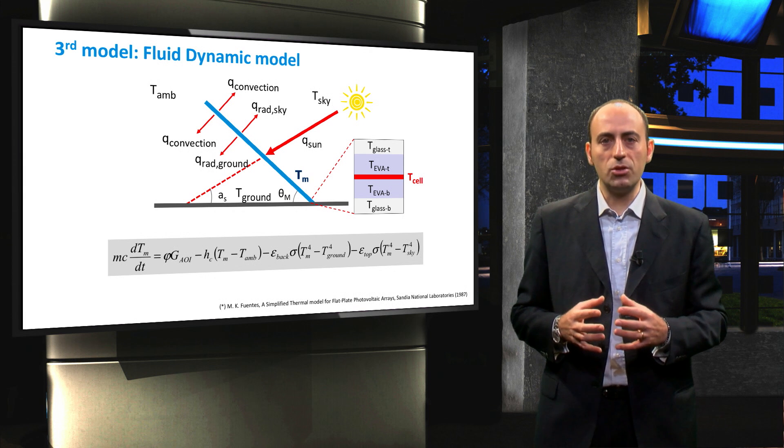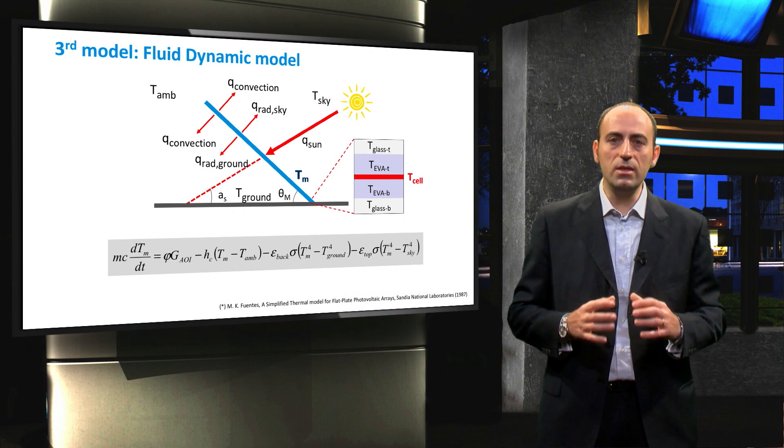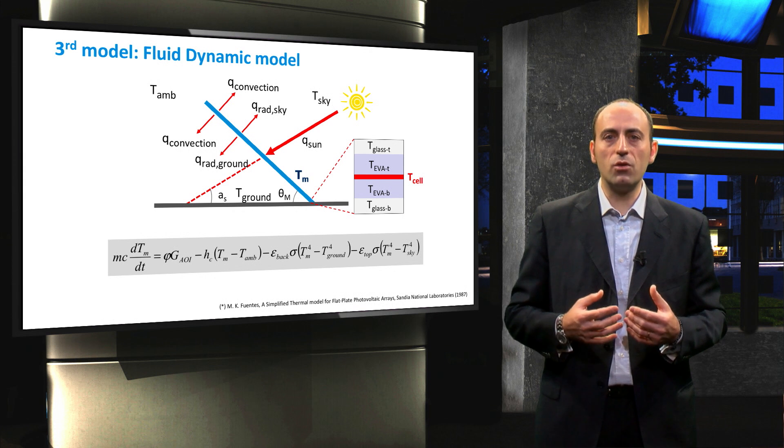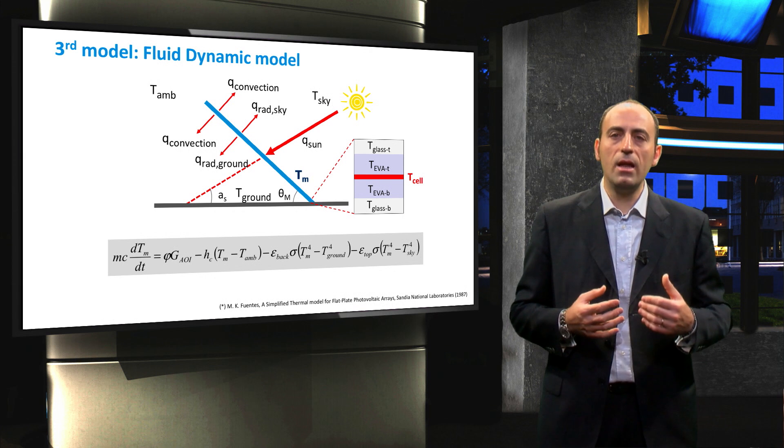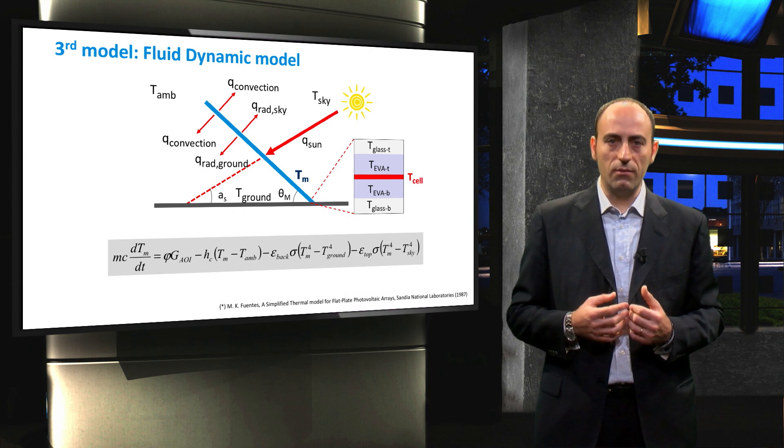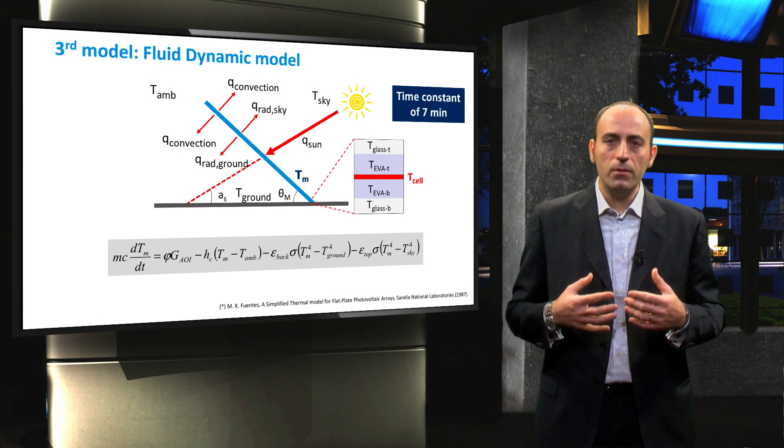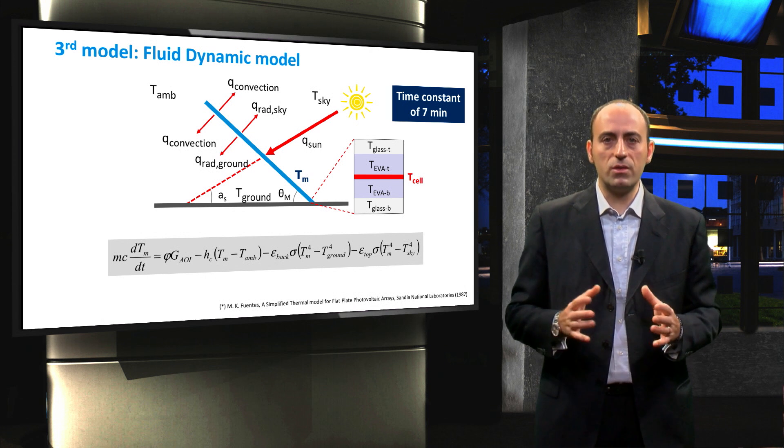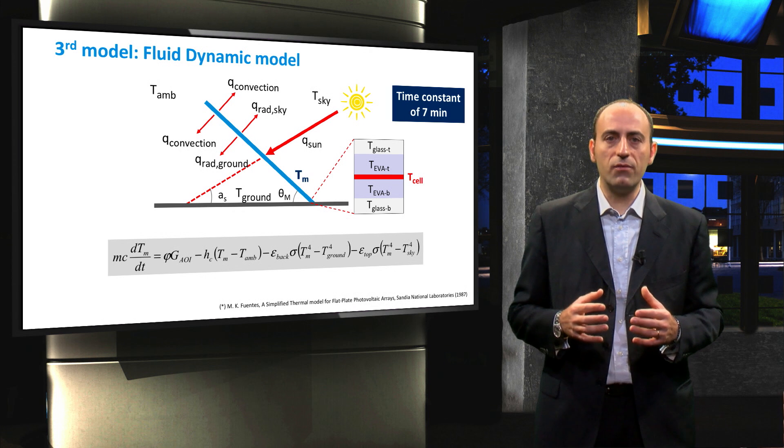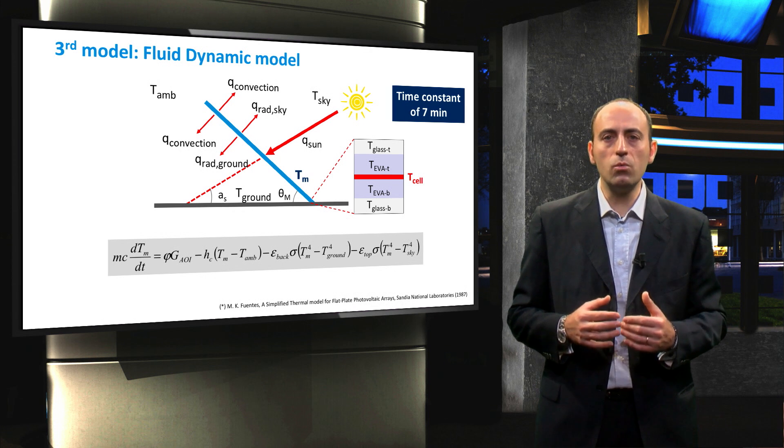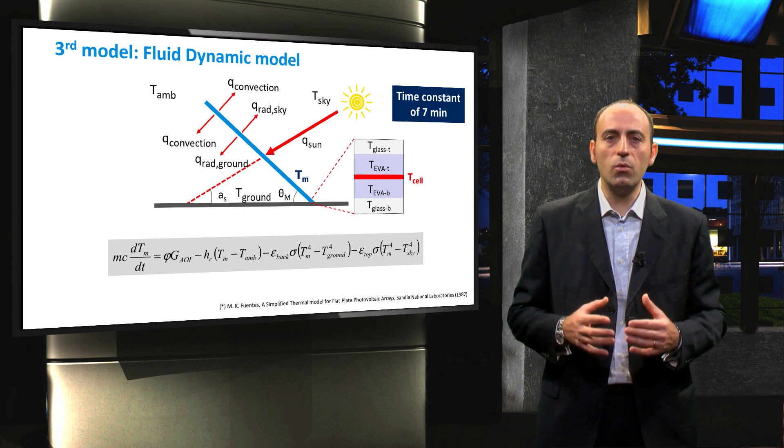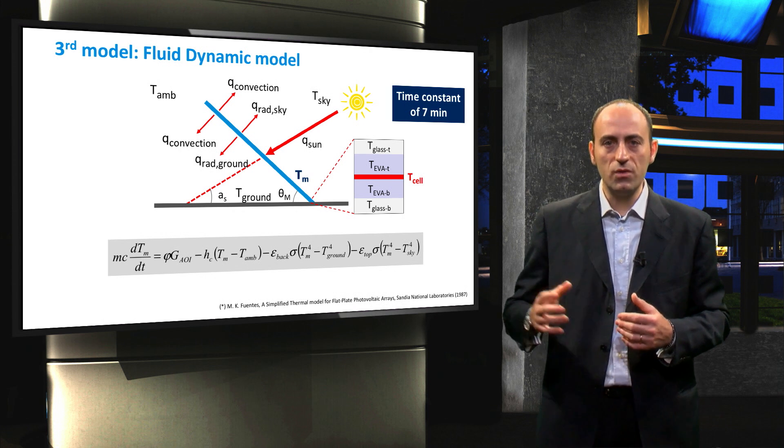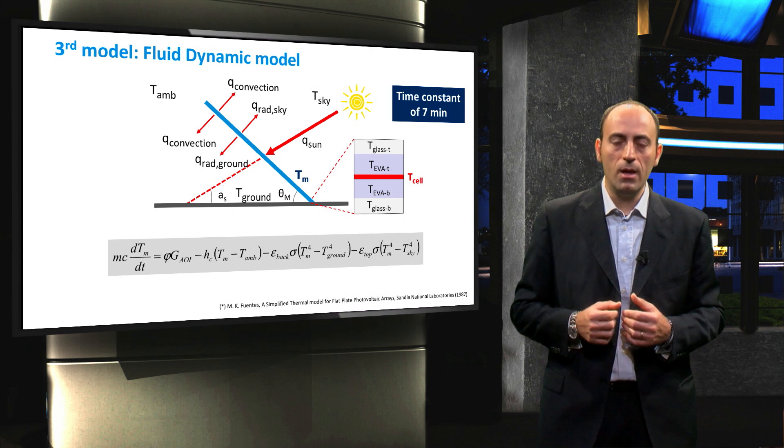Another assumption that we are going to use is that we consider a steady state situation, while in reality the temperature follows an exponential decay lagging behind the variation in irradiance level. However, the time constant of a PV module is generally in the order of about 7 minutes, meaning that after a step change in irradiance, the module will take around 7 minutes to reach 63% of the total change in temperature.